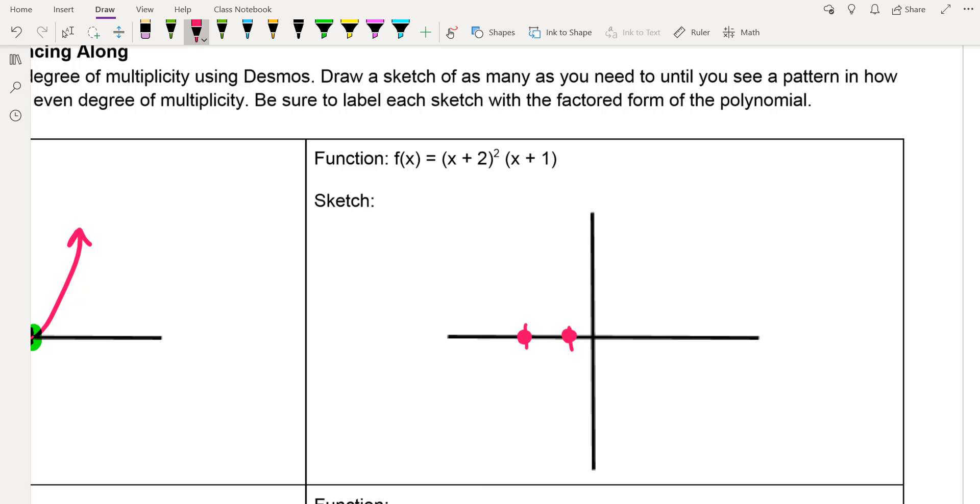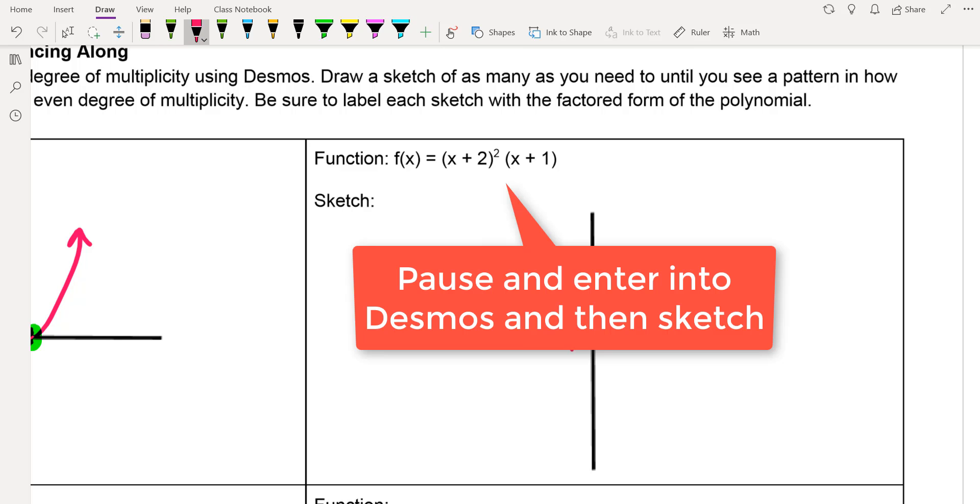So just from looking at the factors, I know what's going on. But again, we want to pay attention to does the polynomial bounce or does it pass through? So let me let you hit pause and put that into Desmos. And then let's check it out. See what we got.